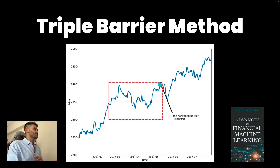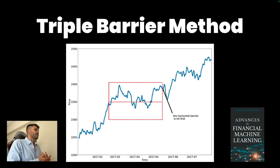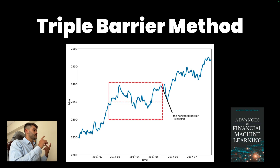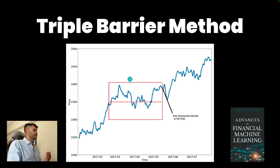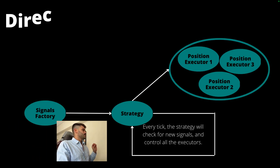Another important concept is the time limit, because a signal is not valid forever. For example, if I'm building a signal for RSI on daily candles, my signal is probably valid that day or the next — it's no longer valid after some days. So essentially we have three barriers: the take profit, the stop loss, and the time limit. Remember that these will differ depending on whether you are long or short.